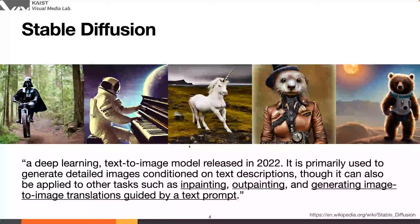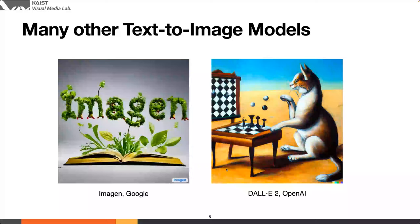Why did stable diffusion become so popular? Not only because of generation quality, but because the model was released in 2022 to the public — everyone can use it, mess around with the code, and fine-tune it for novel tasks. Other diffusion-based text-to-image models exist: Imagen from Google and DALL-E 2 from OpenAI. However, those are closed — you can only access DALL-E 2 via API, while Imagen and others from big tech companies are mostly closed-door.